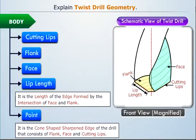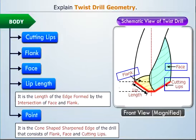The cone-shaped sharpened edge of the drill that consists of flank, face, and cutting lips is known as the point.